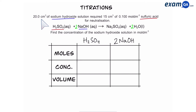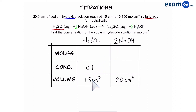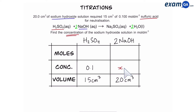Read the question and write down whatever information you've been given. We've been given the concentration and volume of sulfuric acid, and the volume of sodium hydroxide. The question says: find the concentration of sodium hydroxide. To work out the concentration of sodium hydroxide, we also need to know moles. So, what we can do first is work out the moles of sulfuric acid.